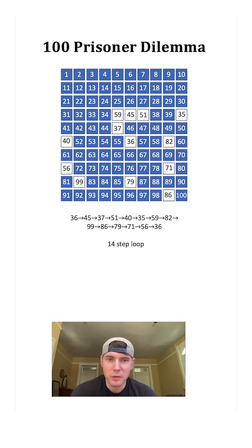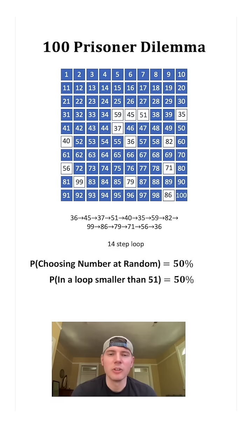Using this method, he shifted his probability. It's not the probability of choosing his card at random - it's now the probability that he is in a loop of less than 50 numbers. And this probability happens to also be 50%. But if we look at this group as a whole now using this strategy, instead of probability of success being random...